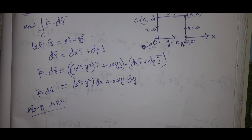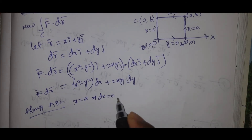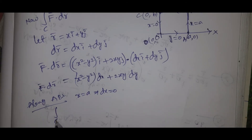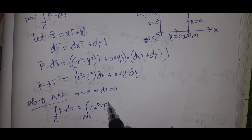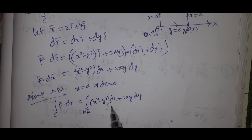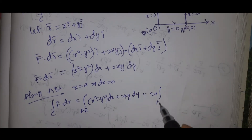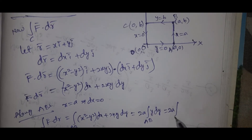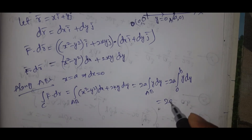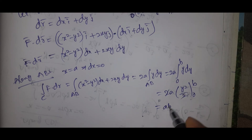Along AB: x = a, that implies dx = 0. So integral along AB of F̄·dr̄ = integral with x=a of 2xy dy = 2a integral from y=0 to b of y dy = 2a · [y²/2] from 0 to b = 2a · b²/2 = ab². This is equation number 3.